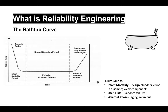There is an uncanny similarity between the bathtub curve and human life, which follows a similar pattern over a lifetime. Humans also experience infant mortality failures early in life, and as they grow older they develop immunity, get stronger, and the chances of death or sickness reduce. The useful life of the product can be compared to the youthful life of humans, where failures are mainly due to random events, and then as they grow old the chances of death or sickness increase over time.